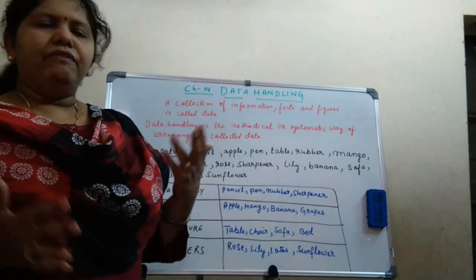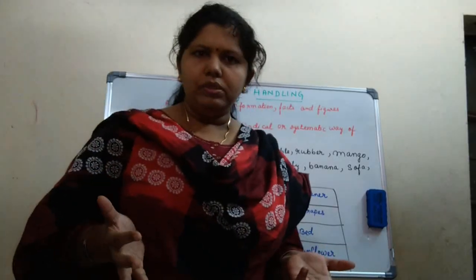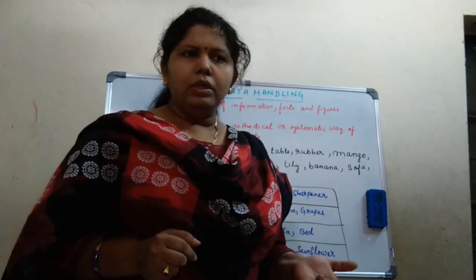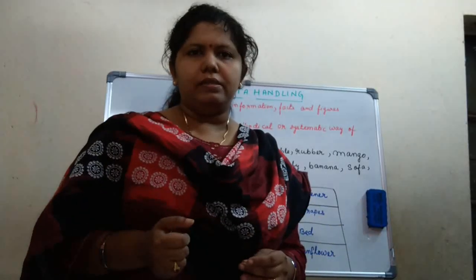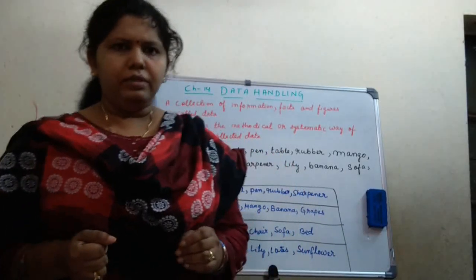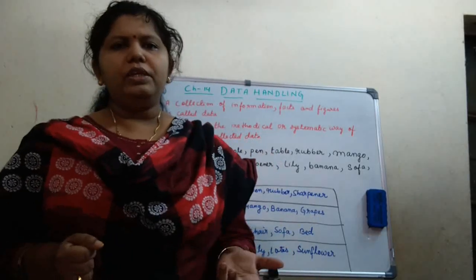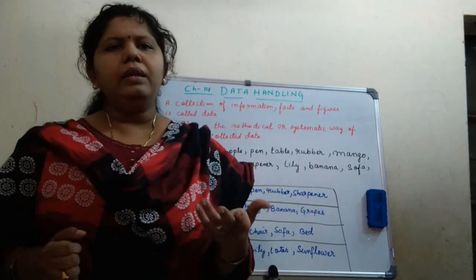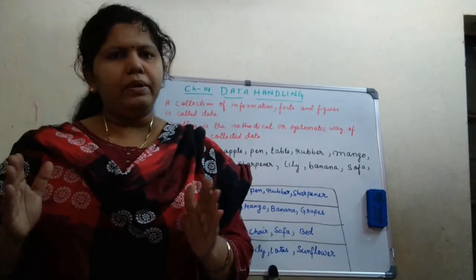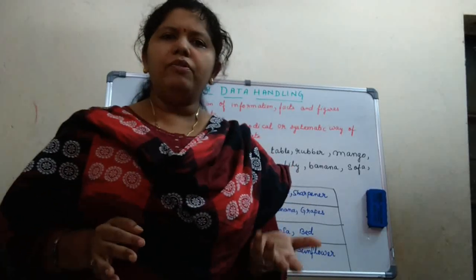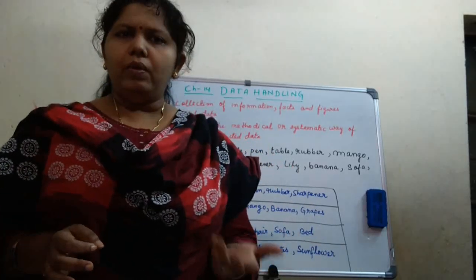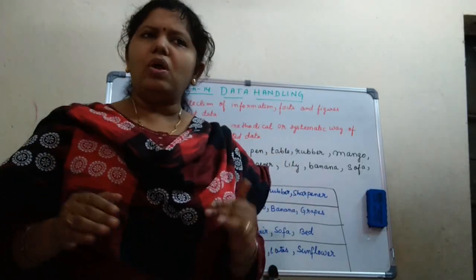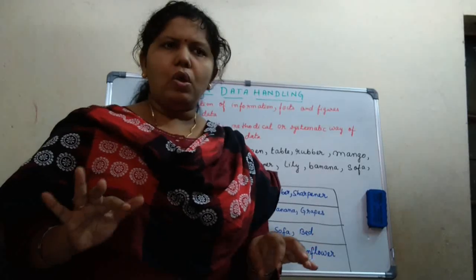When we are having so many things in our house, suddenly we want to search a particular thing. If we don't arrange those things in a proper place, it is difficult to find — yes or no? Similarly, any information or any topic related to any event, if we are keeping it in a tabular way in a proper way, then it is easier to find that thing. So here, whatever data we get that is not organized — that is called raw data.